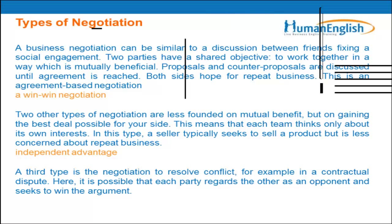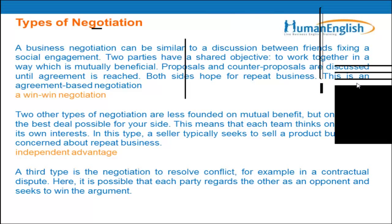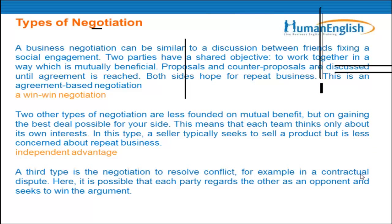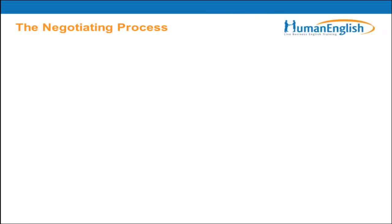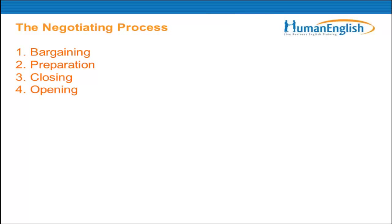Finally, we have a third type of negotiation: to resolve conflict — for example, in a contractual dispute. Here it is possible that each party regards the other as an opponent and seeks to win the argument. An example could be like in a divorce — one party wins and the other loses. This is called a win-lose negotiation. So these are really the three types of negotiations we have in business. But ideally, in a business situation, we would like to have a win-win negotiation.